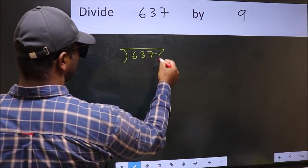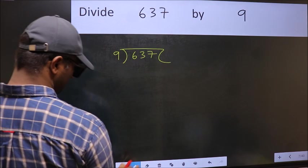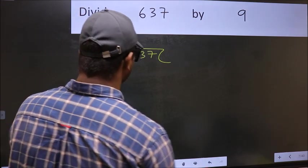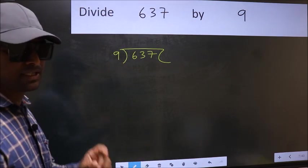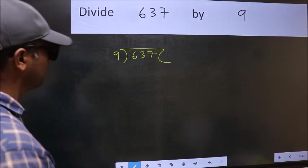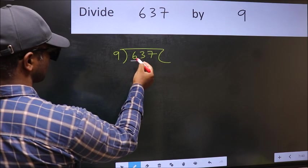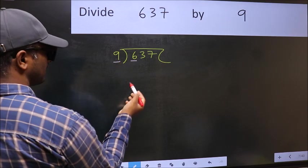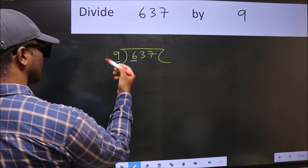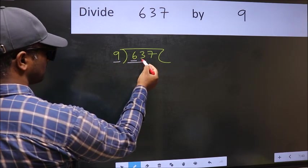Write 637 and 9 here. This is your step 1. Next, here we have 6 and here 9. 6 is smaller than 9, so take two numbers: 63.